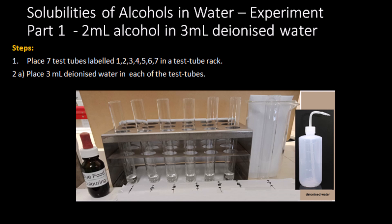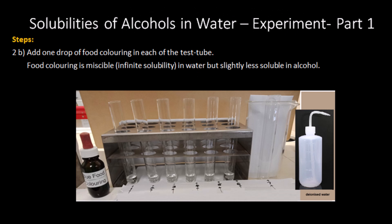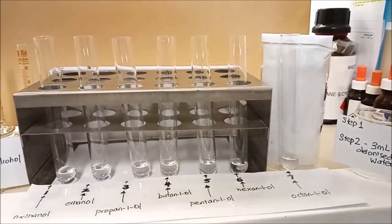Put seven test tubes in a test tube rack and add two mils of deionized water in each of the test tubes. One and two of your experiment.